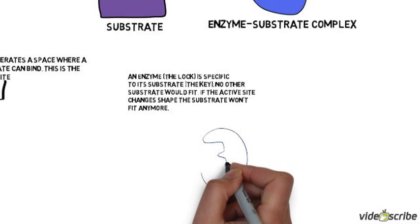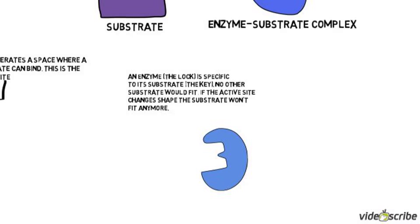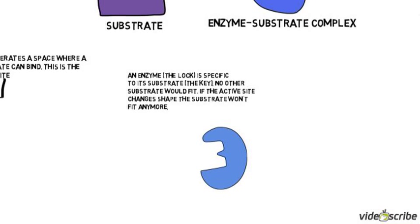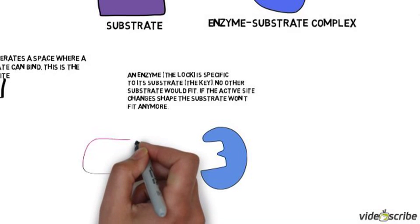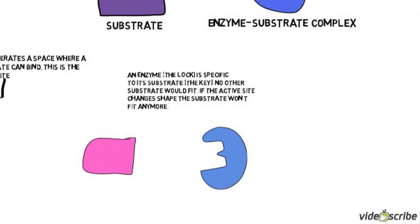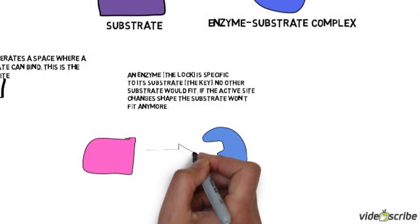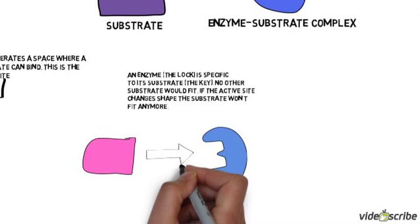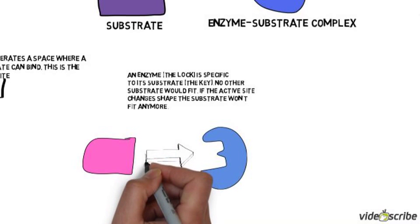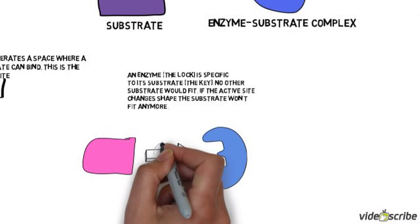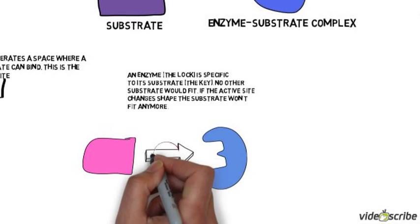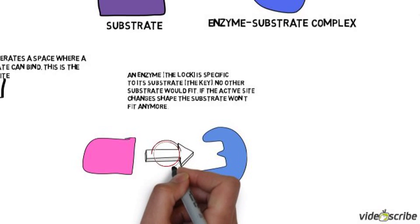We've got the same enzyme here again. Now we've got a different substance which looks different and has a different shape. Because it has a different shape, it doesn't fit into the active site. If the active site changes shape, as we'll see in a second, it also won't fit into the active site.